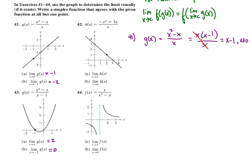Now we want to write a simpler function that agrees with x cubed minus x over x minus 1. We want a function that agrees with that function at all but one point. Once again, the way we're going to do this is by factoring. We factor out an x, but we still have x squared minus 1.